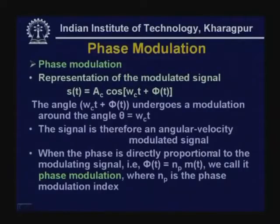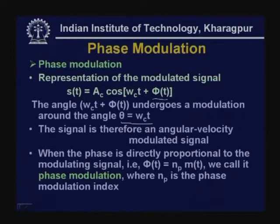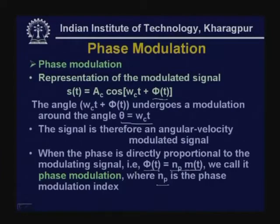Let us now look at phase modulation. The modulated signal is represented as S(t) = E_C cos(ω_C t + φ(t)), where φ(t) is proportional to the phase of the modulating signal. The angle ω_C t + φ(t) undergoes modulation around ω_C t. When the phase φ(t) is proportional to the modulating signal — i.e., φ(t) = N_p · M(t) — we call it phase modulation, where N_p is the phase modulation index, analogous to N_f in frequency modulation.